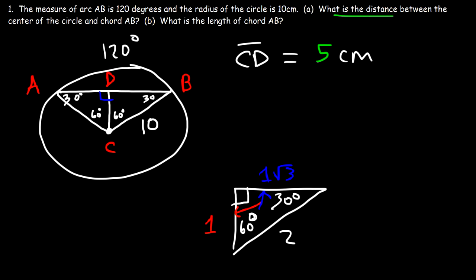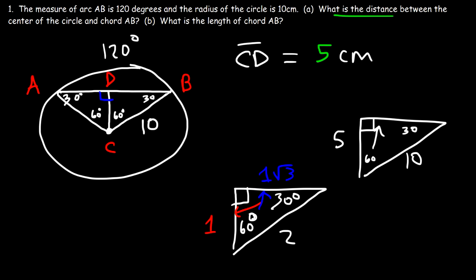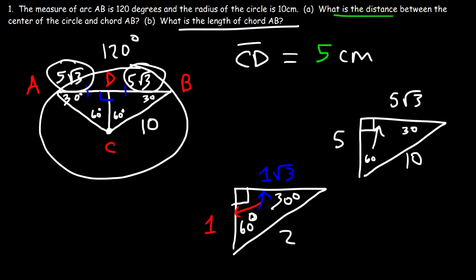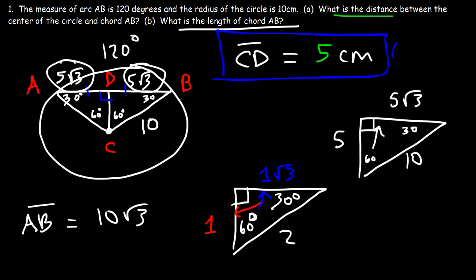CD is 5 centimeters. The side across the 60-degree angle is 5 times the square root of 3, so DB equals 5√3. Since the perpendicular from the center bisects the chord, AD also equals 5√3. Therefore the total length of chord AB is 5√3 plus 5√3, which equals 10√3. Now you know how to find the distance from the center to a chord and the chord's length given the arc measure.